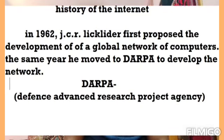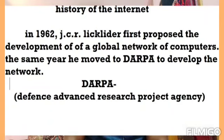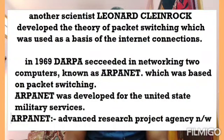In 1962, a scientist named JCR Licklider proposed creating a global network of computers. The idea behind DARPA — Defense Advanced Research Projects Agency — was also tied to this vision. Another scientist, Leonard Kleinrock, developed the theory of packet switching, which was used as the basis for internet connections.